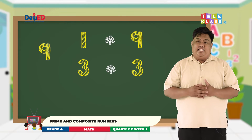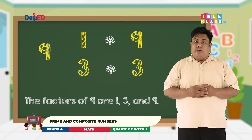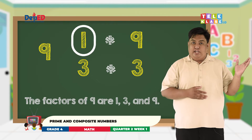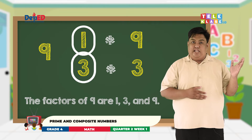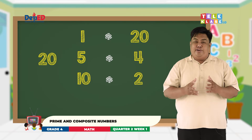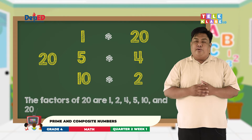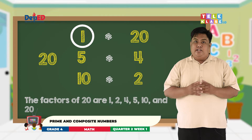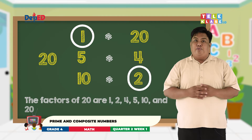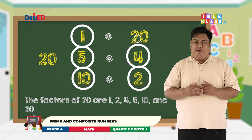Let's take 9. The factors of 9 are 1, 3, and 9. And for the factors of 20, we have 1, 2, 4, 5, 10, and 20.